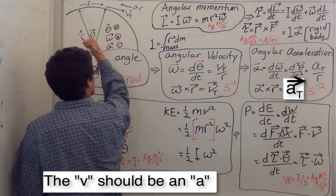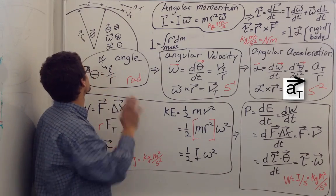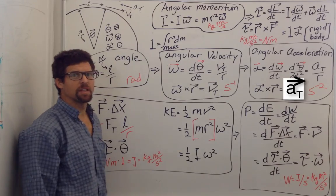Let's try that once. If this is alpha in this direction, then alpha coming out at you cross the radius gives you the tangential acceleration.